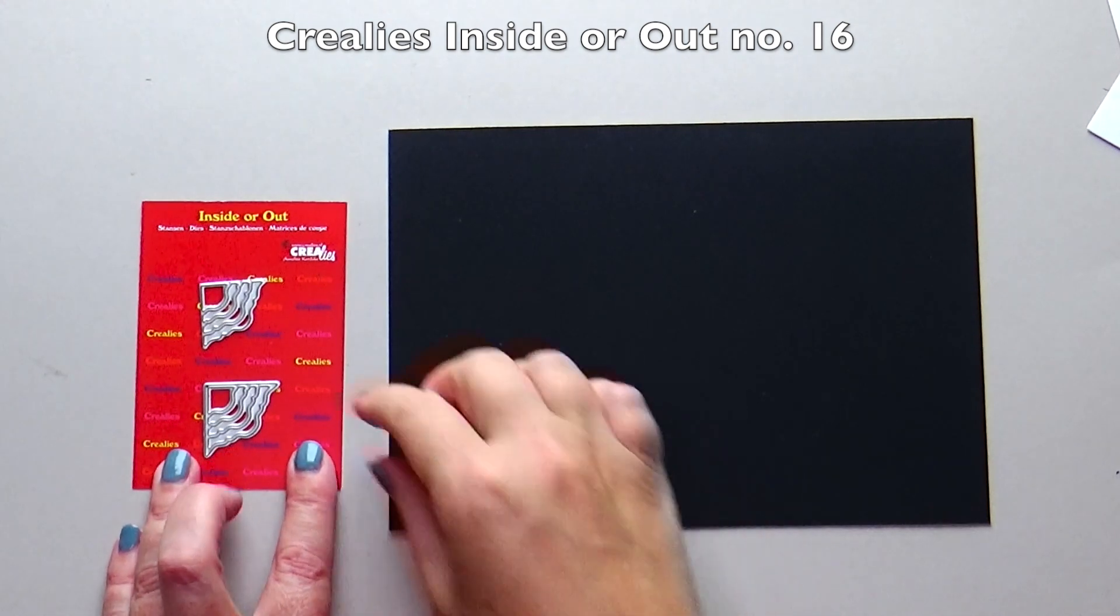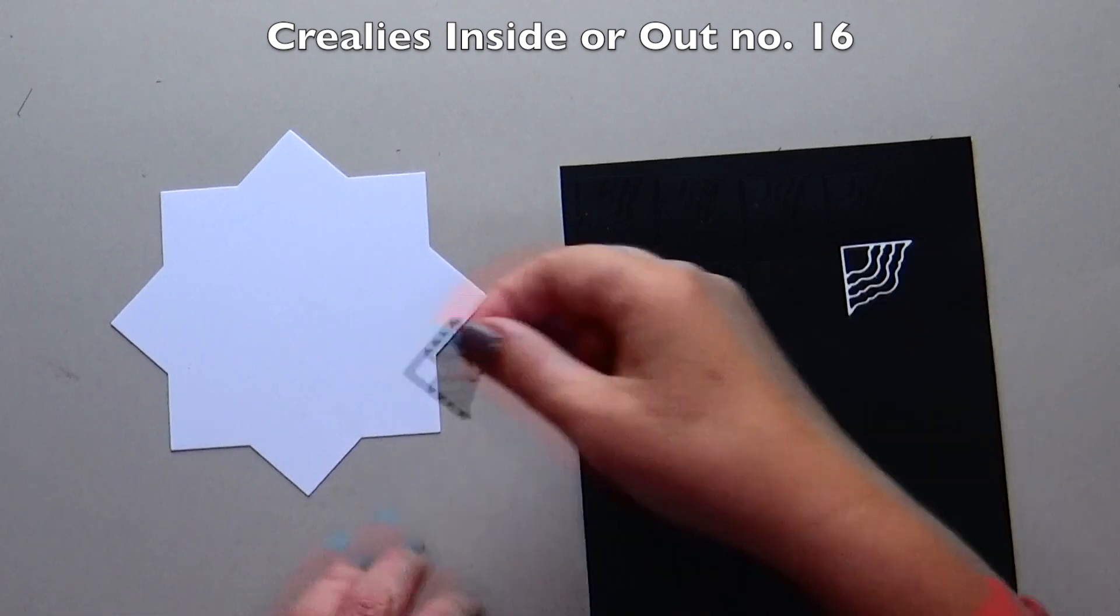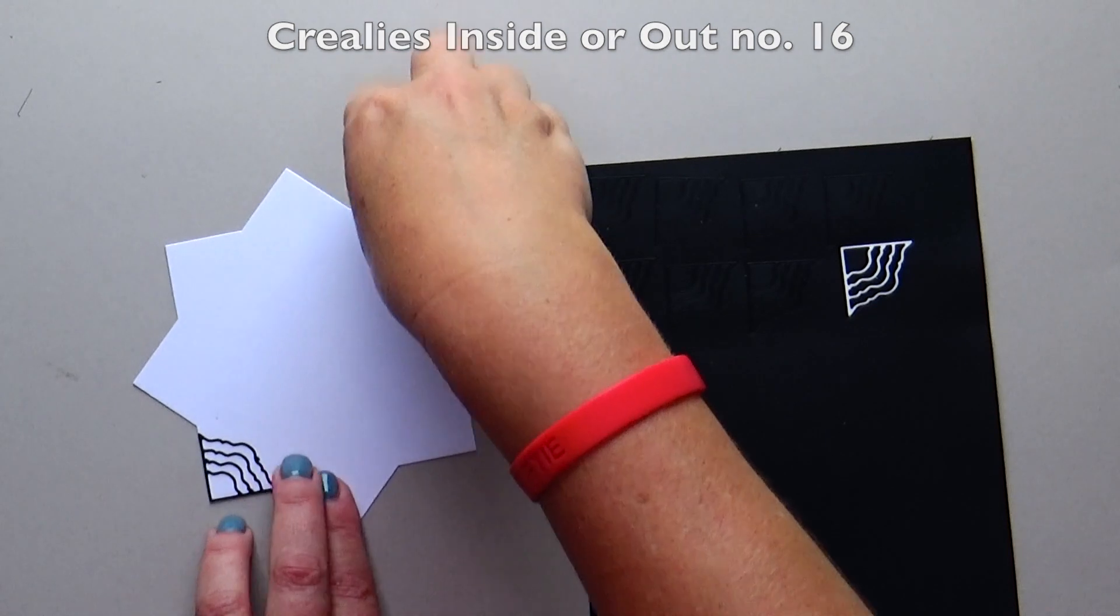Die cut the outside die 8 times out of the cardstock with Crealies make a sticker out of your die-cut shape behind it. Stick the corners on the largest 8-pointed star.